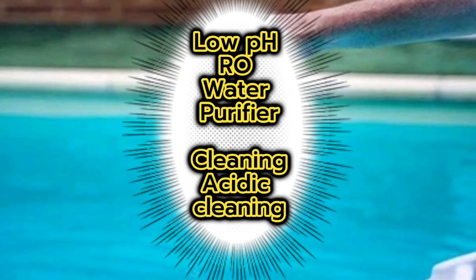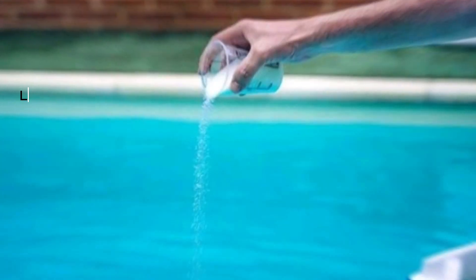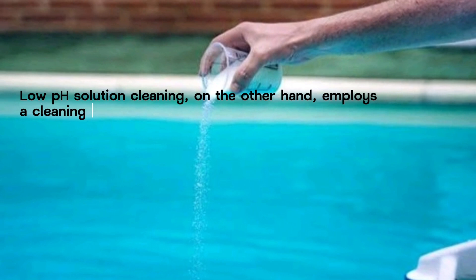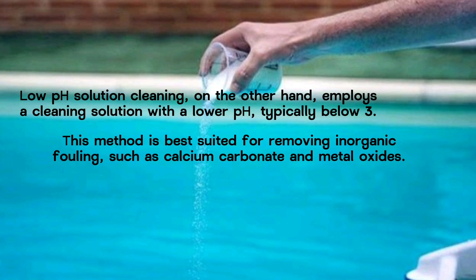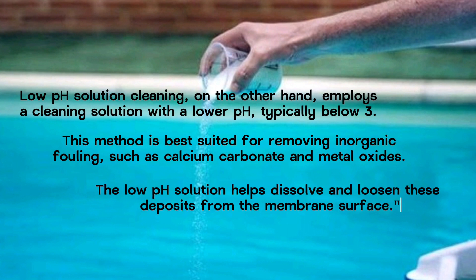Low pH RO water purifier cleaning — acidic cleaning. Low pH solution cleaning employs a cleaning solution with a lower pH, typically below 3. This method is best suited for removing inorganic fouling such as calcium carbonate and metal oxides. The low pH solution helps dissolve and loosen these deposits from the membrane surface.